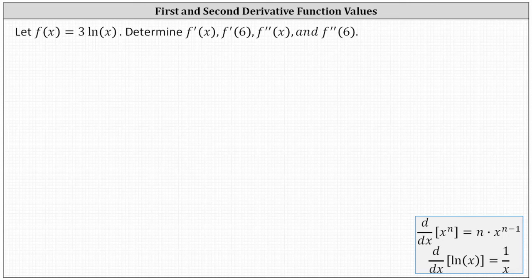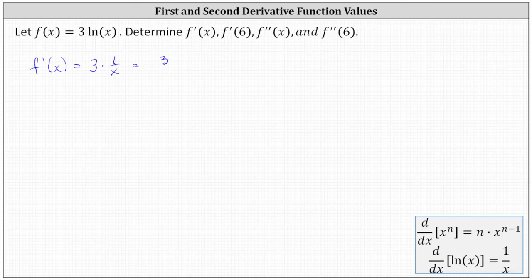Let's begin by determining the first derivative, or f prime of x, which is equal to the derivative of three natural log x. This equals three times the derivative of natural log x, which we can see below is equal to one divided by x, giving us three times one divided by x, which is equal to three divided by x.